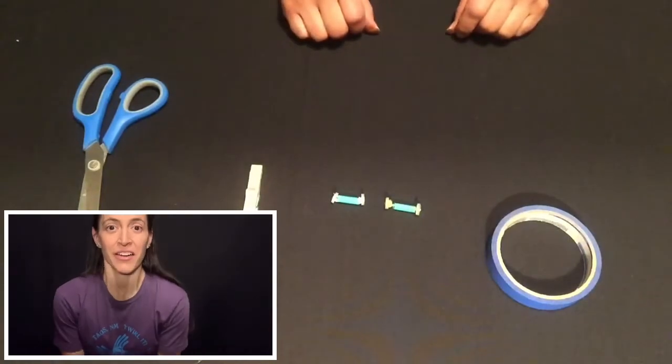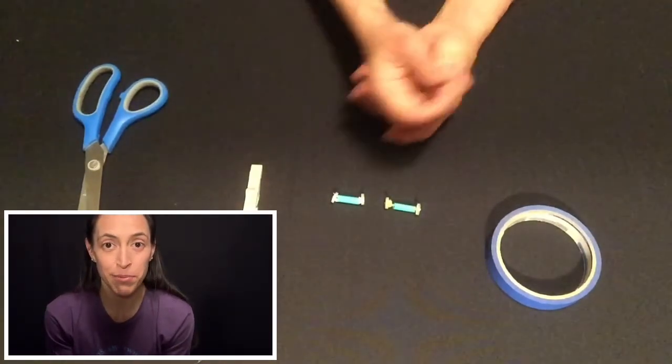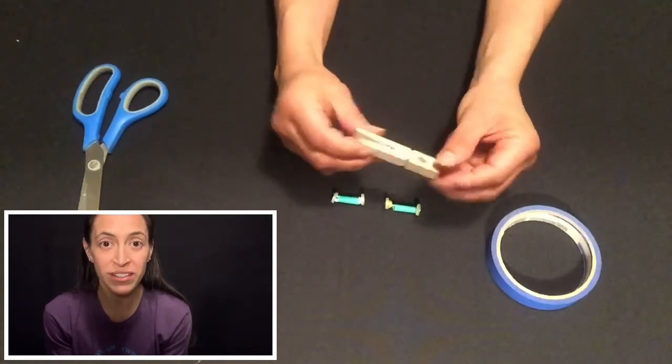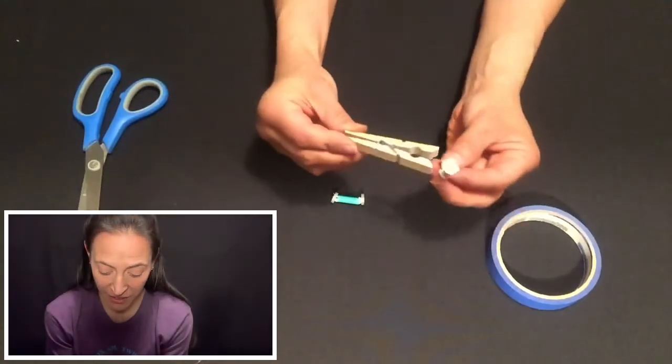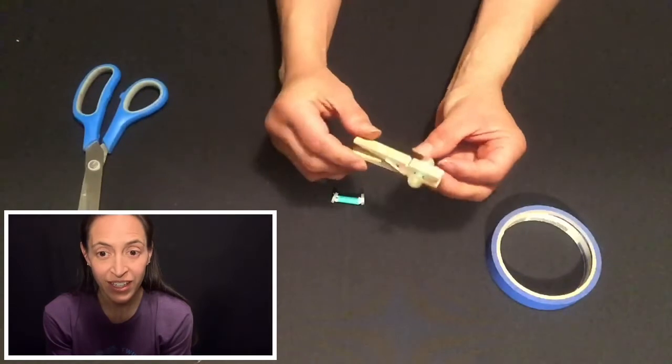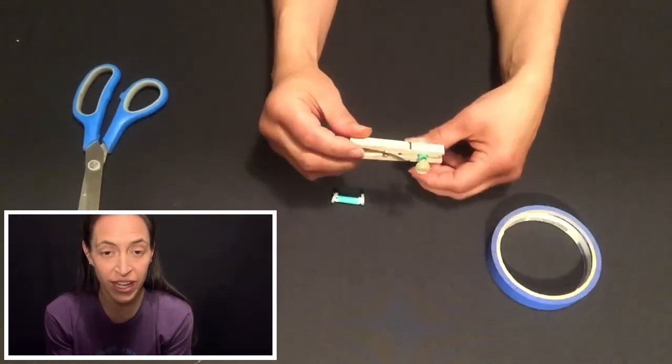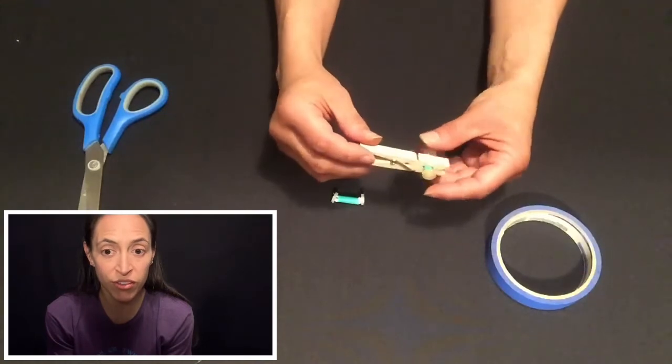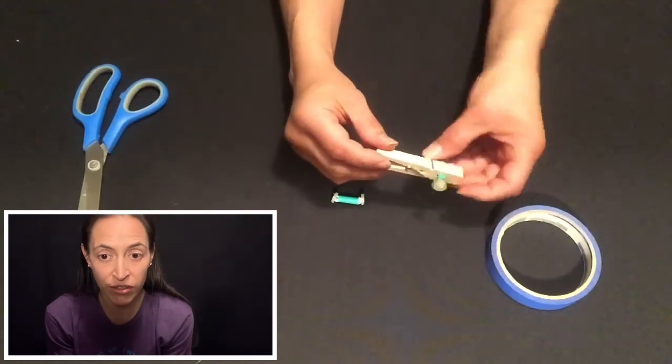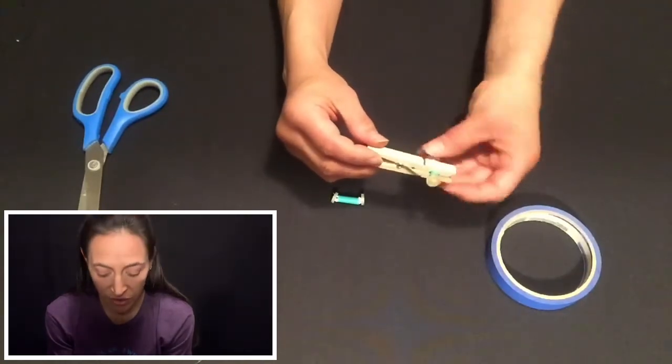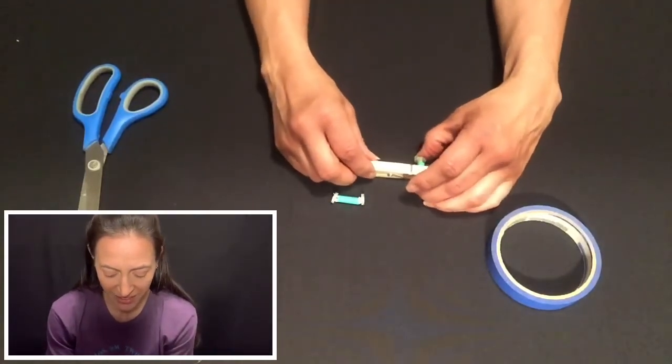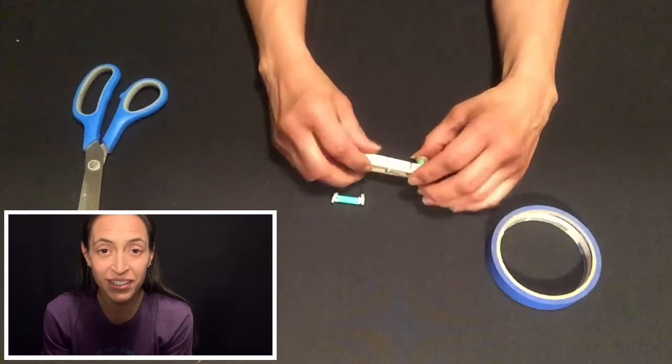Alright, the next thing I'm going to do is I'm going to take my clothespin and I'm going to put one set of wheels right inside of there. It shouldn't be so tight that it squishes the straw—if it squishes the straw it won't allow the wheels to roll back and forth, so you might have to play with that.